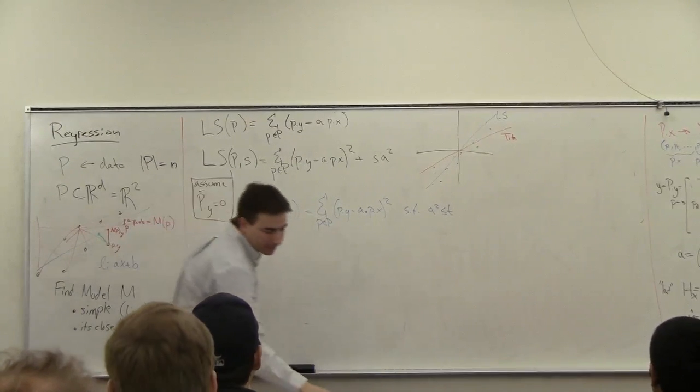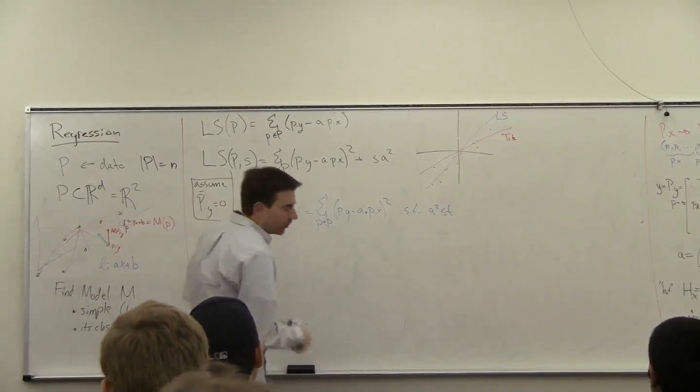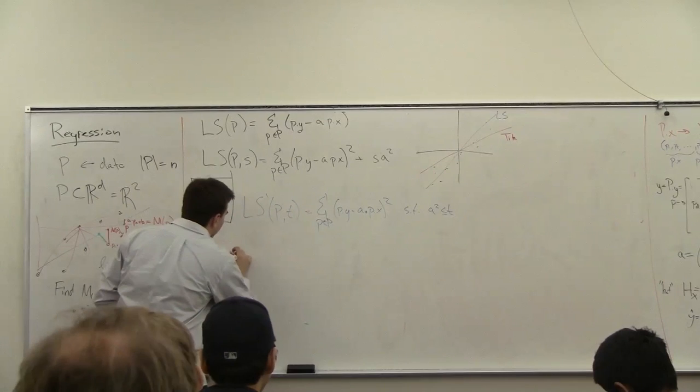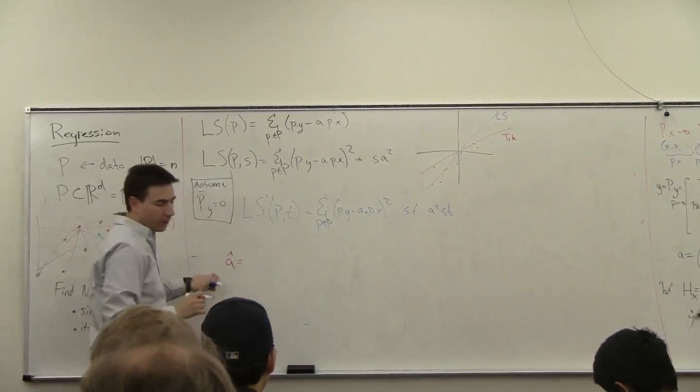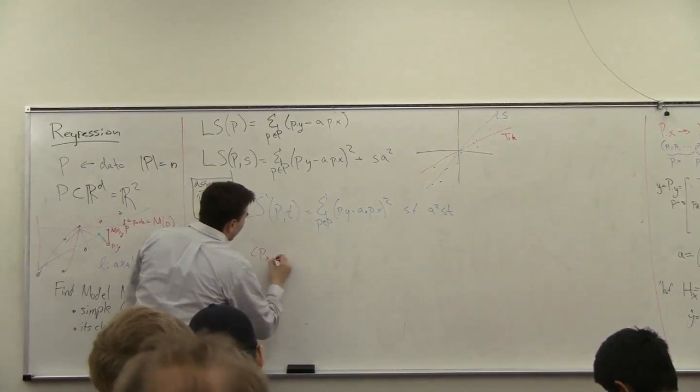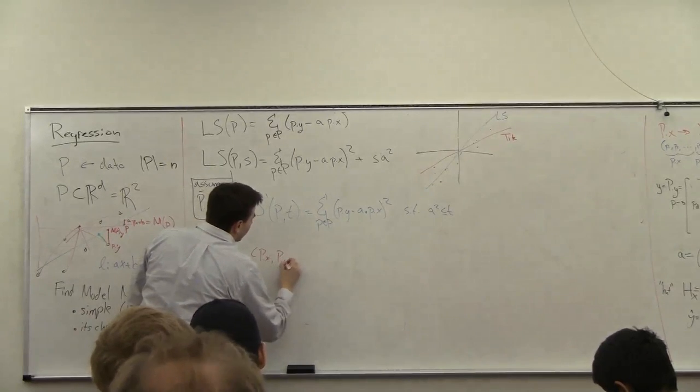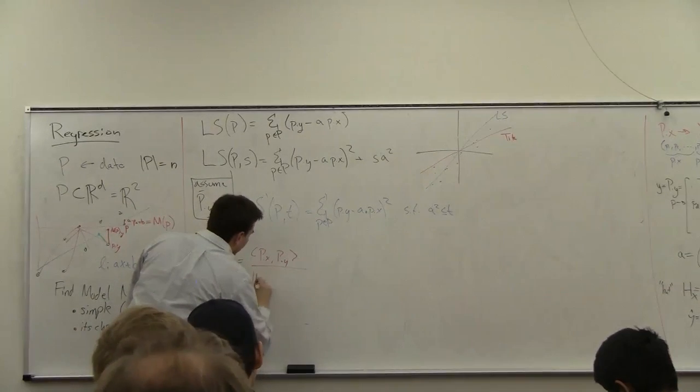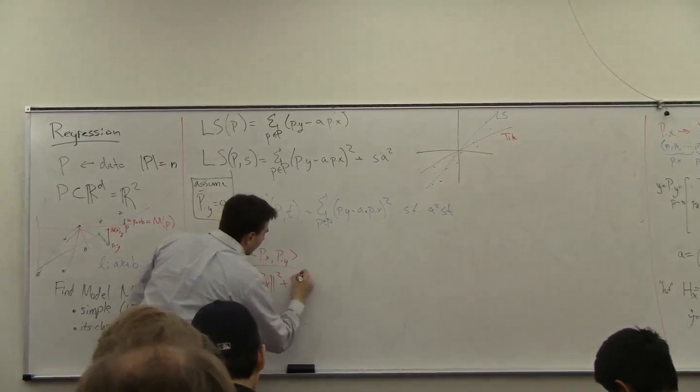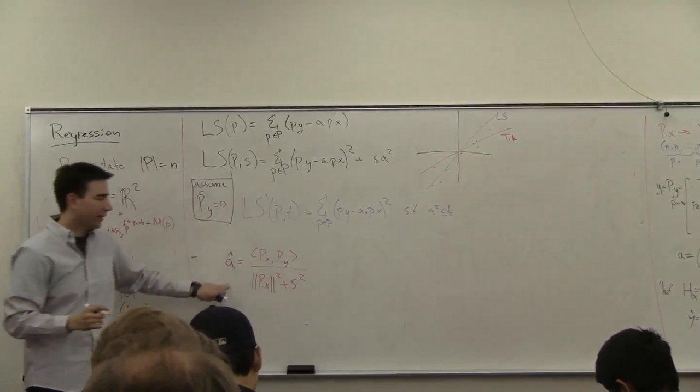Okay, so that's one cool thing. The other thing is that you can now solve for a, this slope parameter, as px, py over, like this.